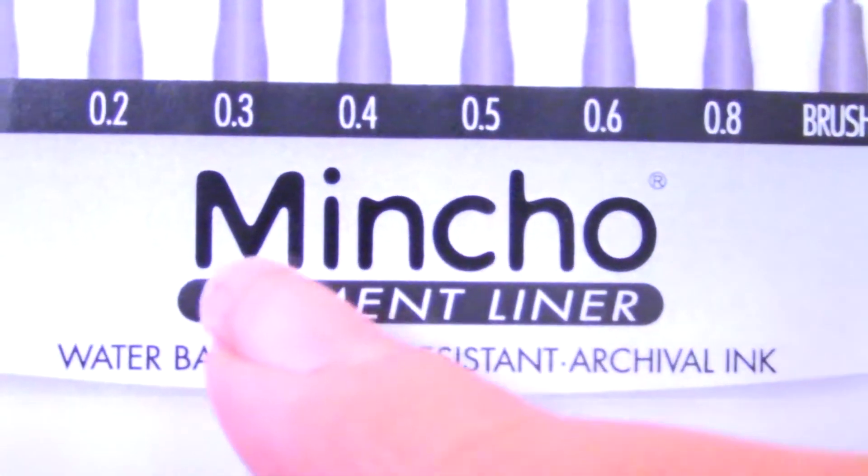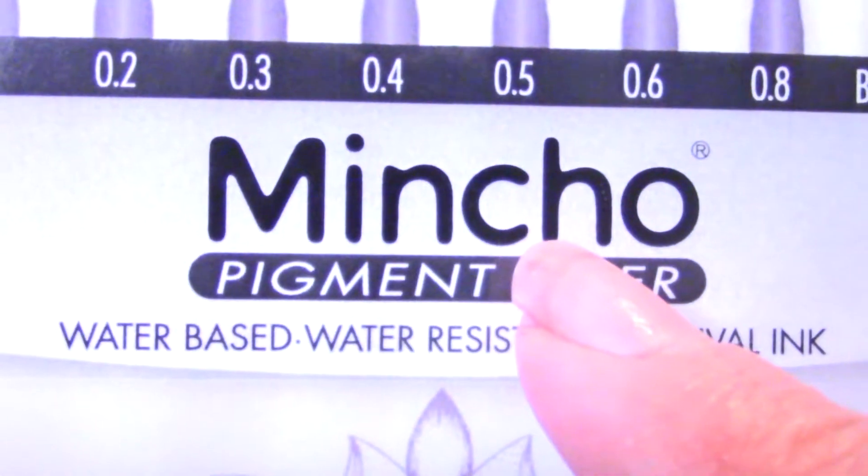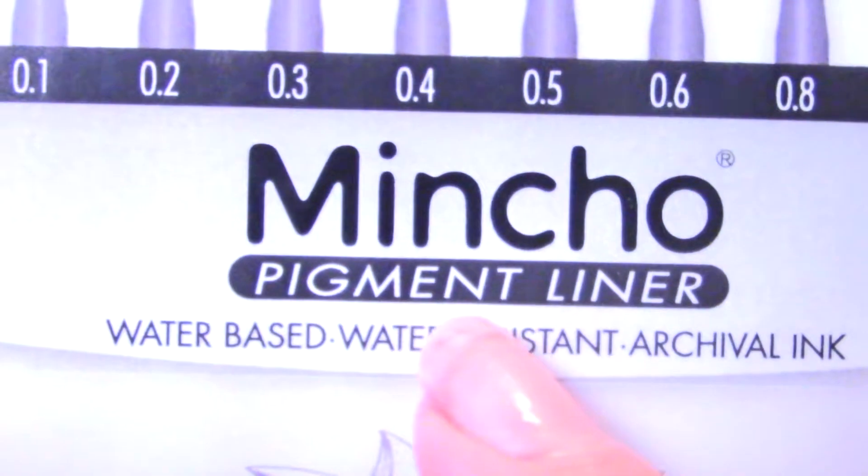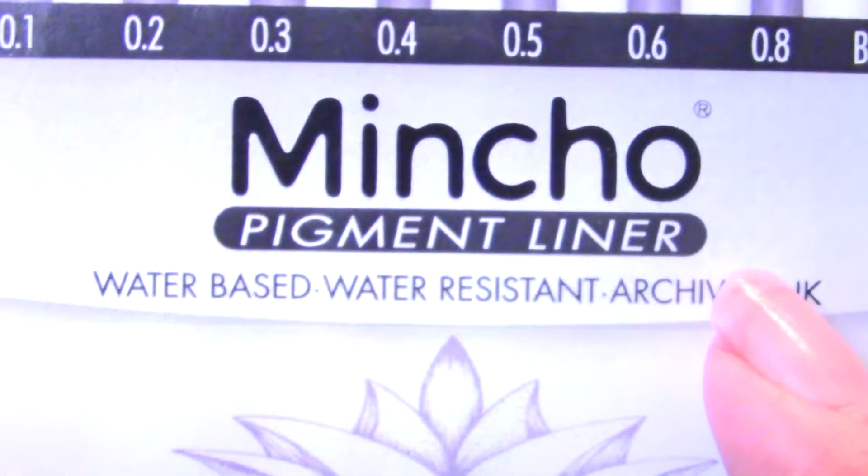First of all are the pens that I'm going to be using. Now, last year I used the Unabal Single 207 pens to draw the Inktober drawings. But this year I decided to vouch for something different. I'm going to use Mincho Pigment Liner pens this year. And I think these are the kind of pens that I think most people use during Inktober. I mean, not these specific pens, but pigment liner pens. And how could they not when they're water-based, water-resistant, and archival ink? Therefore, you can do no wrong.